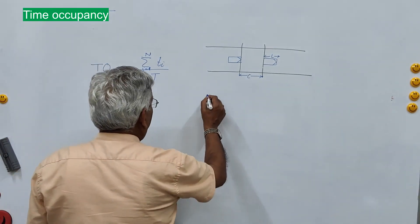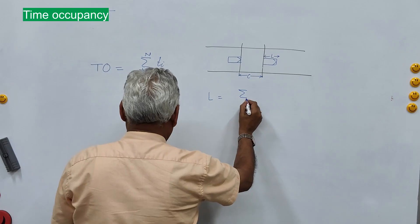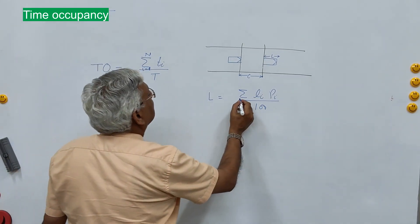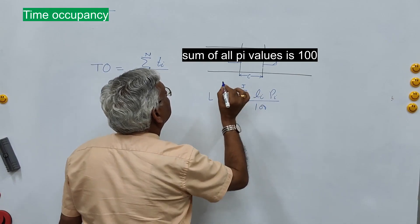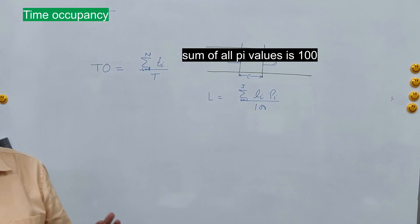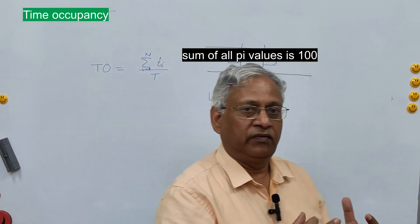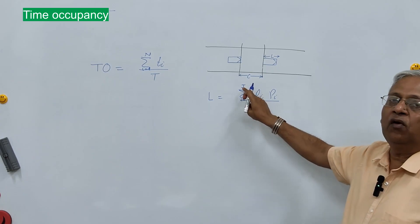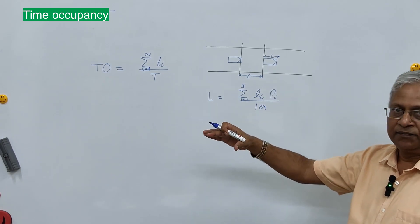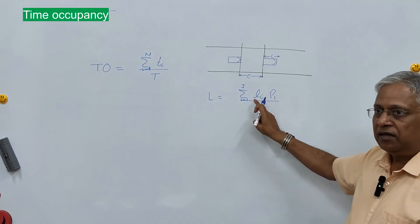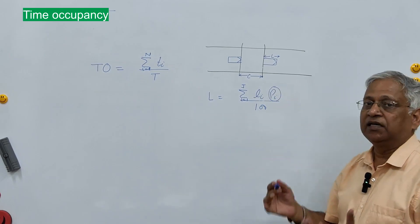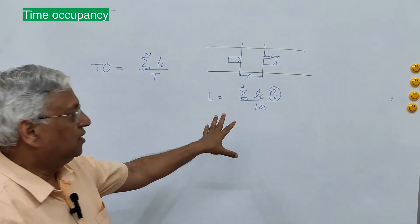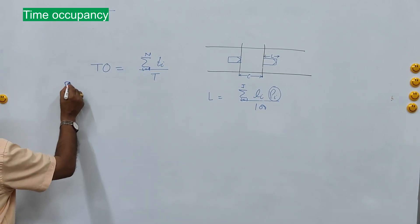The average effective length of the vehicle L is given by the equation: summation of l_i × p_i / 100, where i = 1 to j, and j is the number of vehicle categories in the traffic stream. For example, if you have two categories — car and heavy vehicle — i = 1 for car and i = 2 for heavy vehicle. This gives you the length of each vehicle type multiplied by its proportion in the traffic stream, summed to get the average effective length.